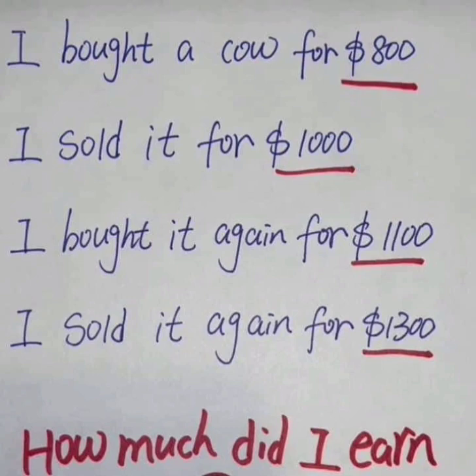I think the person has made $400, and I'm going to show you five different ways of how I look at it. The first way is to look at it as separate transactions. First transaction: you bought for $800 and sold for $1,000 — that's a profit of $200. Second transaction: you bought for $1,100 and sold for $1,300 — that's another $200. So $200 plus $200 gives you a total of $400.